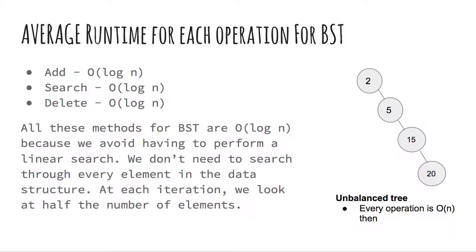On average, the method will take order log n. However, if the tree is unbalanced, meaning that all the nodes are heavier on one side than the other, all these operations will take order n. If it is super unbalanced, the tree is essentially a linked list.